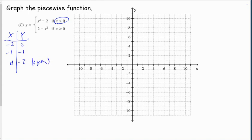So 0, negative 2, that's open. Negative 1, negative 1. And negative 2, positive 2. So we see this is a parabola on this side opening up with an open point here.